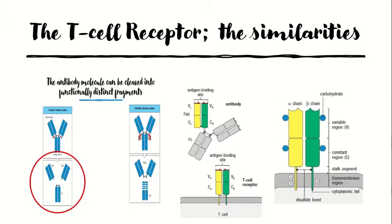Looking at the structure in more detail: the T cell receptor heterodimer is composed of two transmembrane glycoprotein chains — alpha and beta. The extracellular portion of each chain consists of two domains resembling immunoglobulin V and C domains respectively. Both chains have hydrocarbon side chains attached. A short stalk segment analogous to an immunoglobulin hinge region connects the Ig-like domains to the membrane and contains cysteine residues that form the inter-chain disulfide bond. The transmembrane helices of both chains contain positive or basic residues within the hydrophobic transmembrane segment — the alpha chain carries two such residues and the beta chain one.